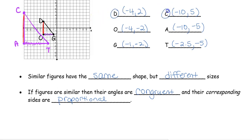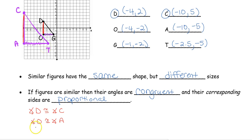For the corresponding angles: angle D and angle C are corresponding, therefore angle D is congruent to angle C. O and A are in the same spot, so angle O is congruent to angle A. And angle G and angle T, so angle G is congruent to angle T. Corresponding angles are congruent — that's the same thing we did with congruent triangles.